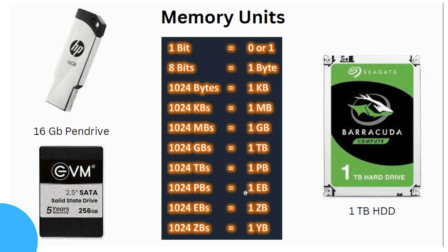1024 terabytes is equal to 1 petabyte (PB). 1024 petabytes is equal to 1 exabyte (EB). 1024 exabytes is equal to 1 zettabyte (ZB). 1024 zettabytes is equal to 1 yottabyte. This is the full memory unit hierarchy.